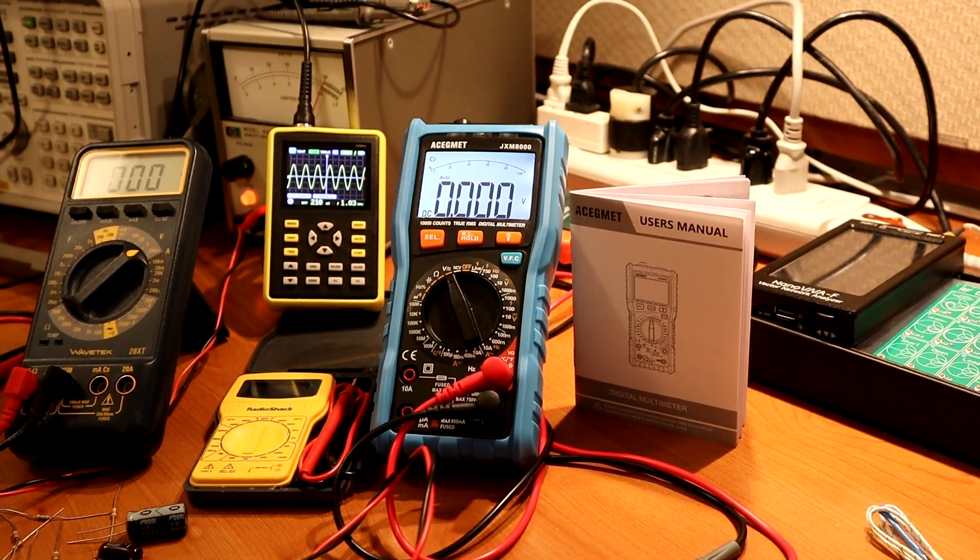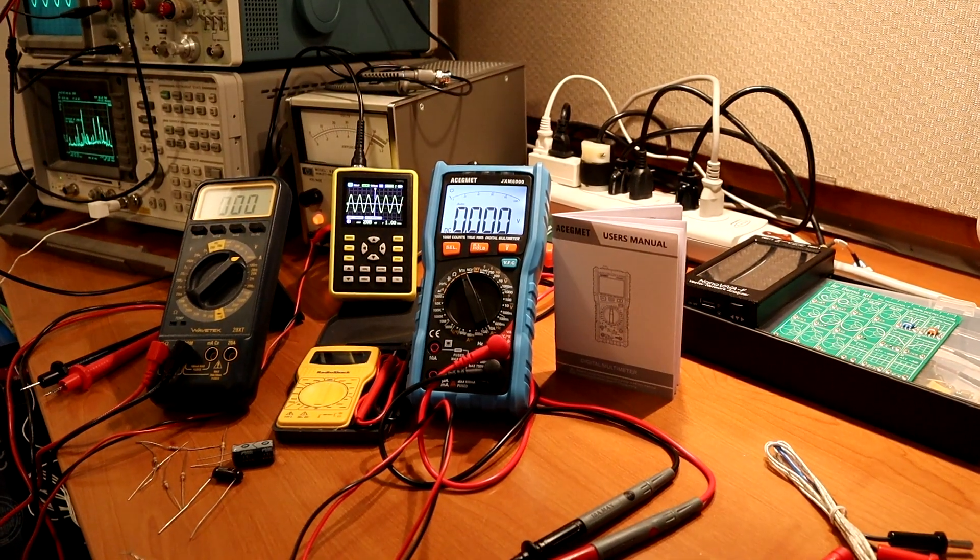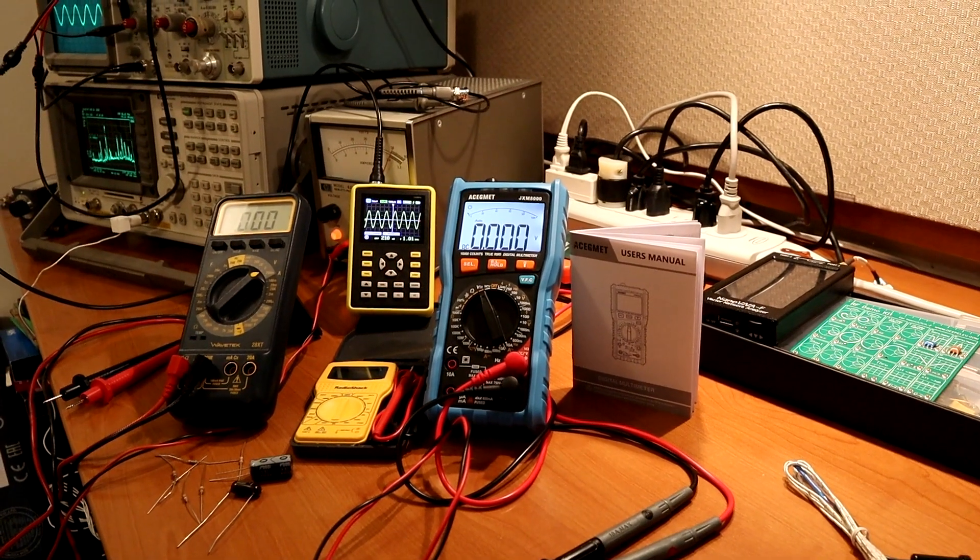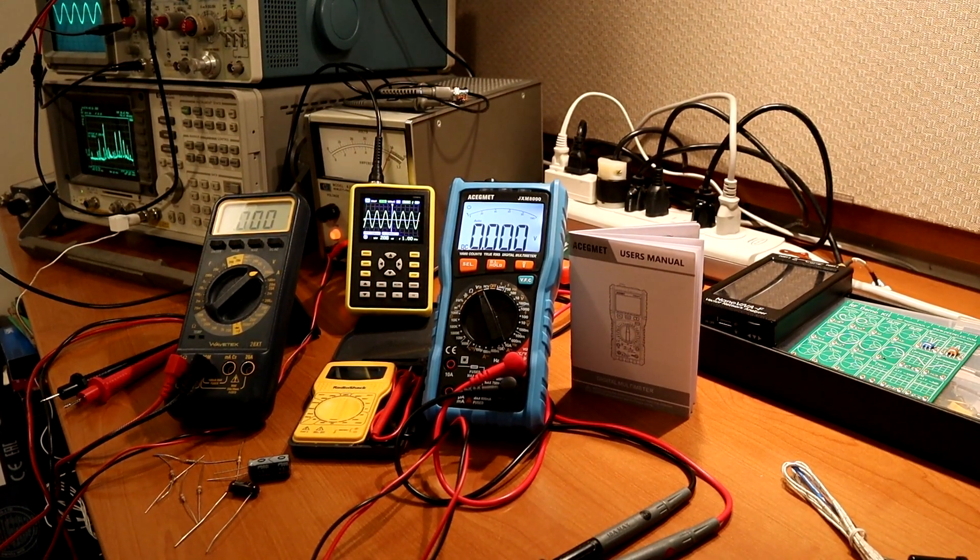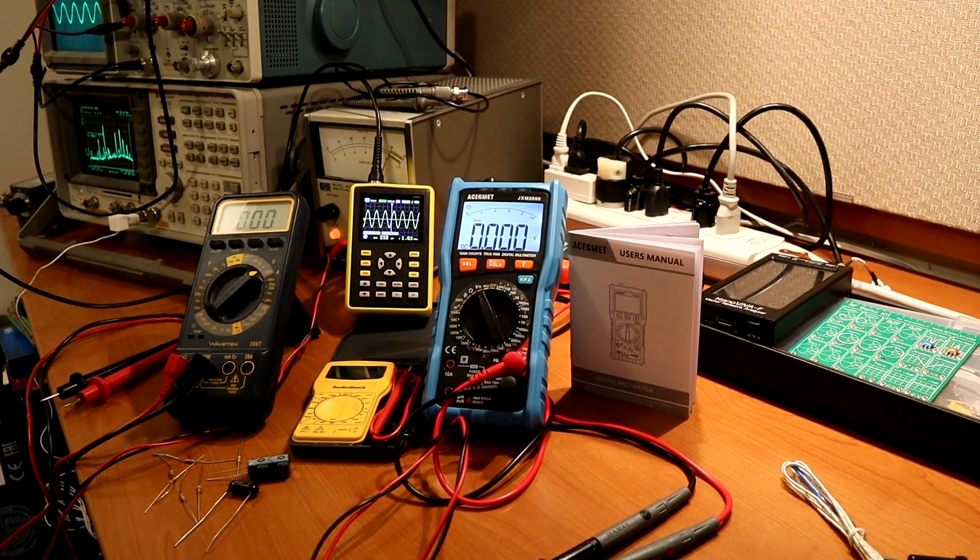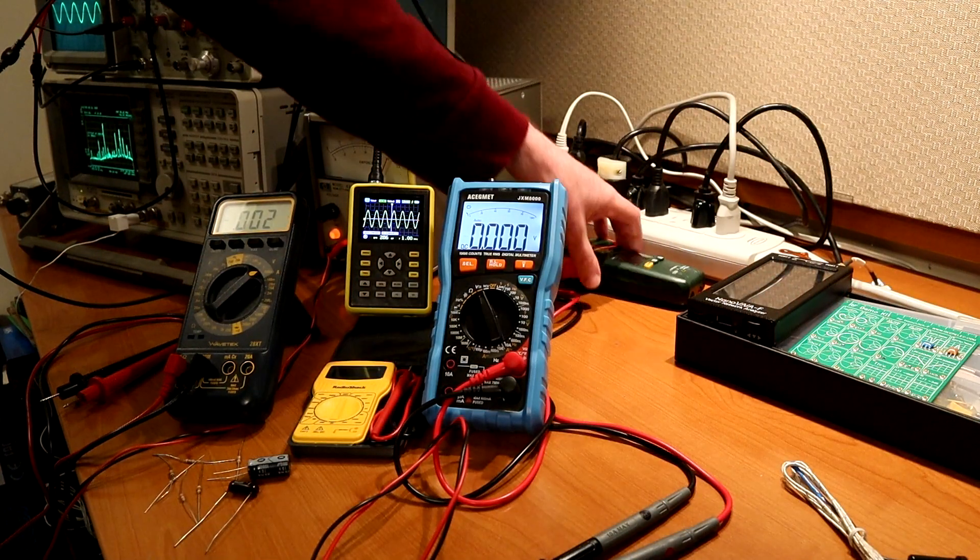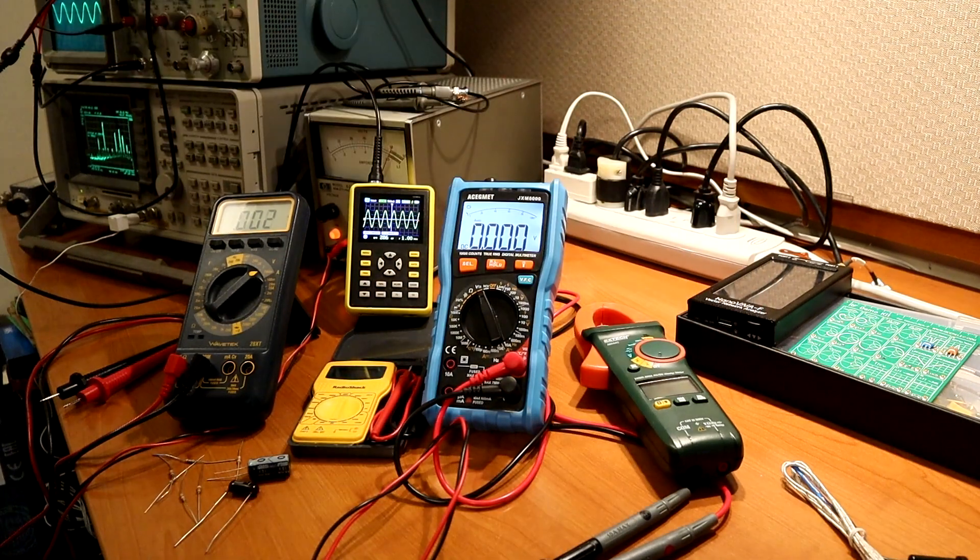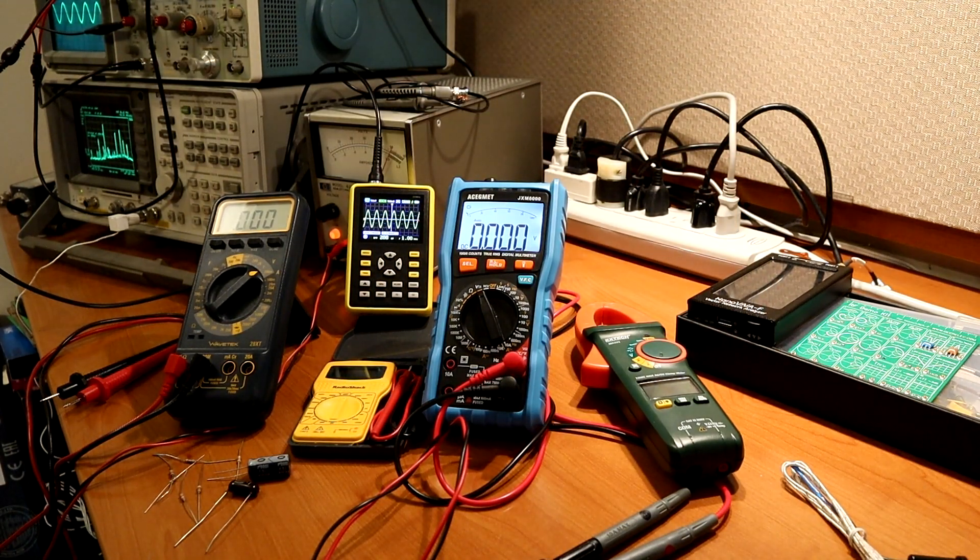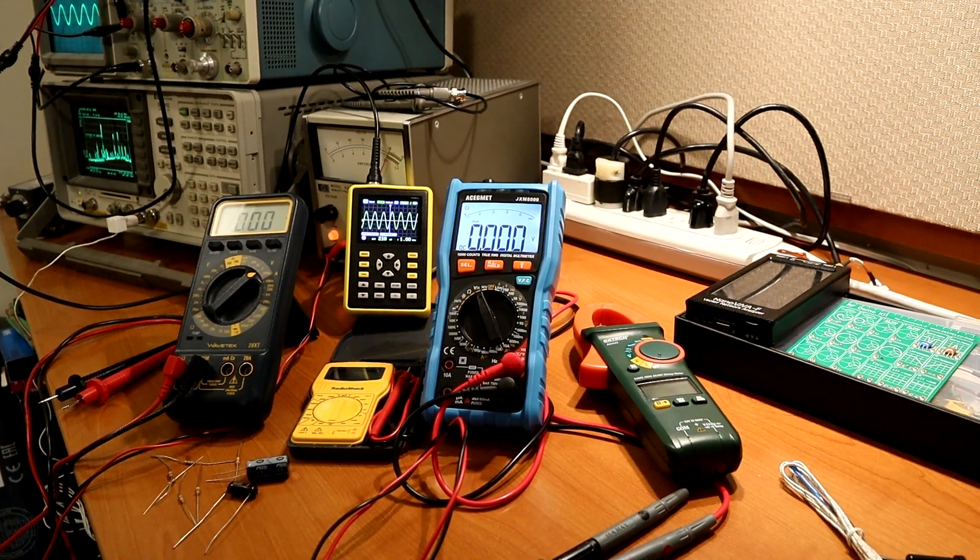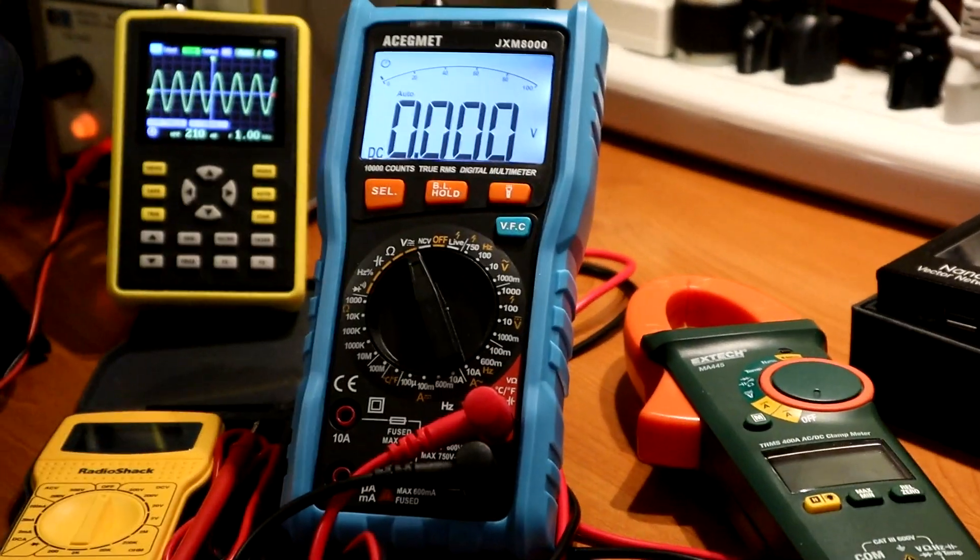And I've also got some other test equipment here. I'm trying to build my home lab. So there's a spectrum analyzer in the background there, an old analog scope. I've actually got several multimeters, including this clamp meter. Talk about that later. But the main focus is going to be on this new Ace G-Met meter.